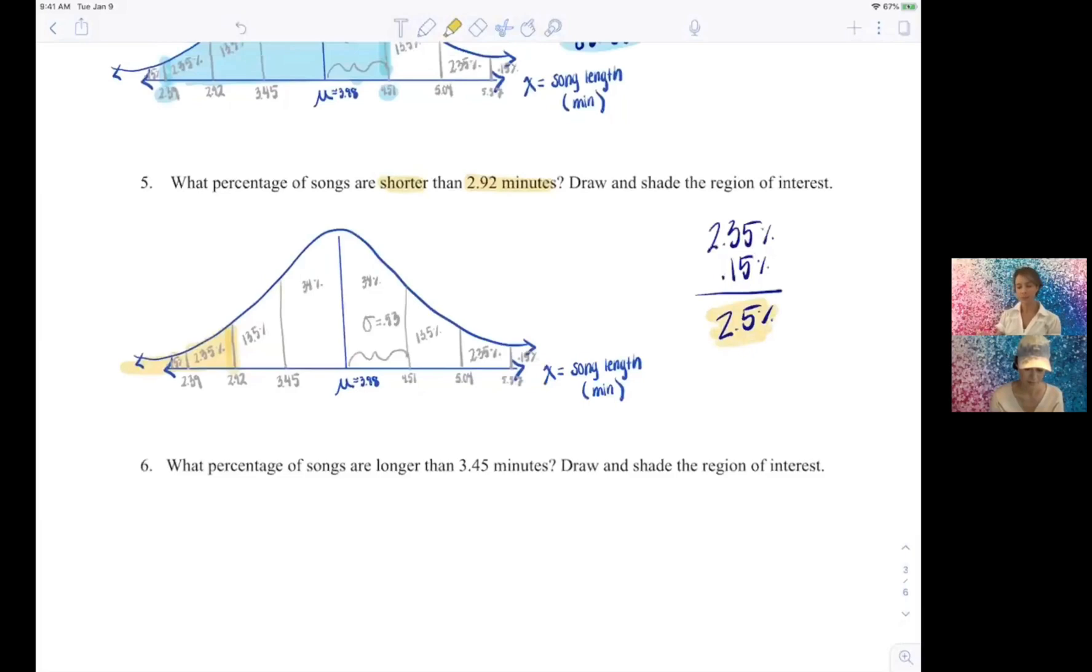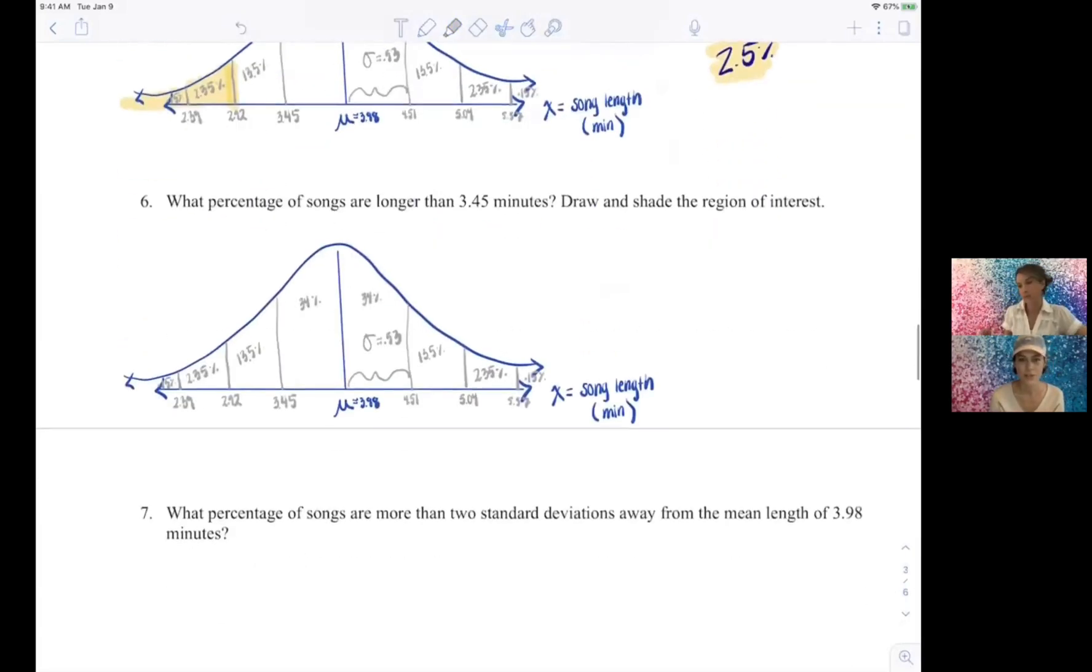Let's try a couple more. What percentage of songs are longer than 3.45 minutes? That just means we're going to shade to the right of 3.45. Aren't we glad we did all that legwork of drawing the picture and labeling it? Yep, because now look at my creepy coloring. Because now that we've done all that work at the top, these problems are a piece of cake.